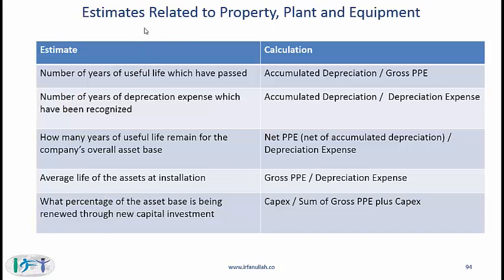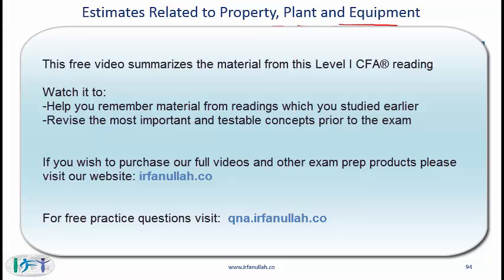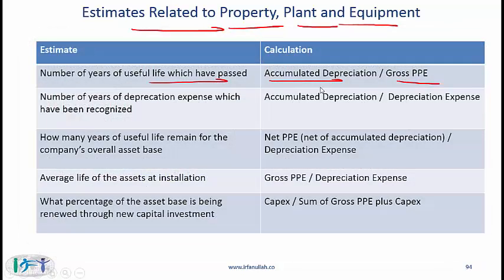This slide covers estimates related to property, plant, and equipment, connecting to the reading on long-lived assets. To estimate the years of useful life already passed, the calculation is accumulated depreciation divided by gross PP&E. This is simple but highly testable, so make sure to review the rest of the estimates and calculations on this slide.